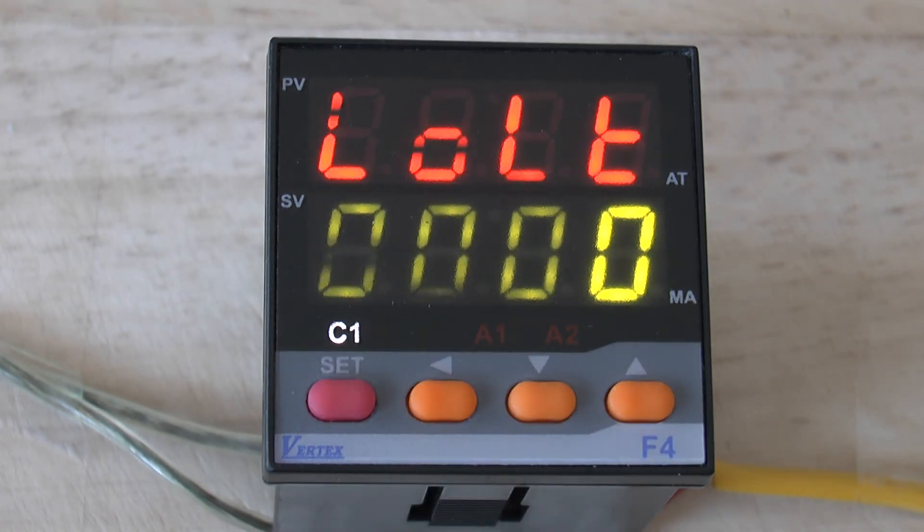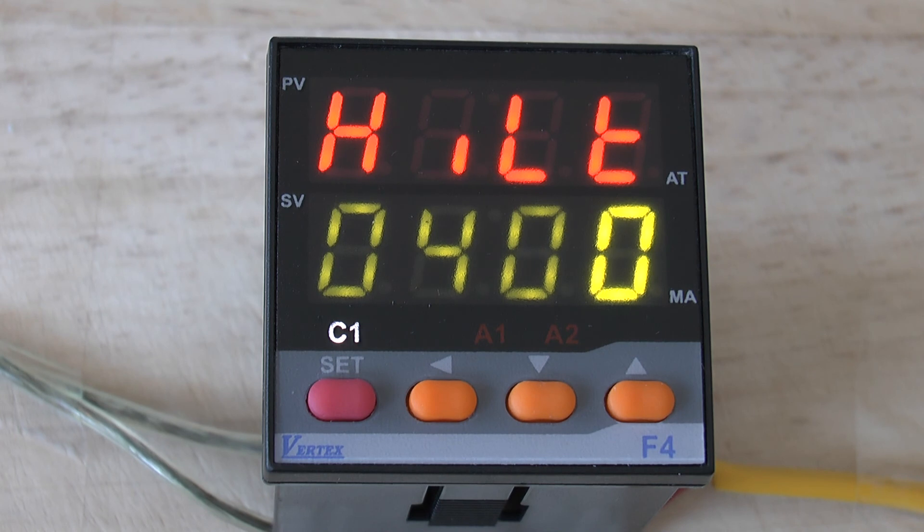The next parameter is the LOLT which is the low level of your measuring range. Next parameter is the HRLT which is the high level of your measuring range.